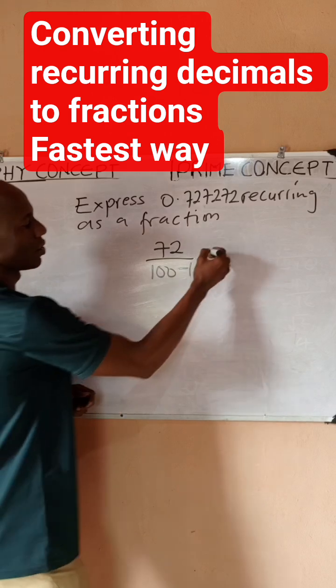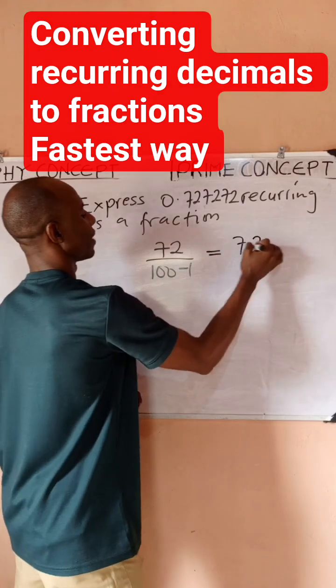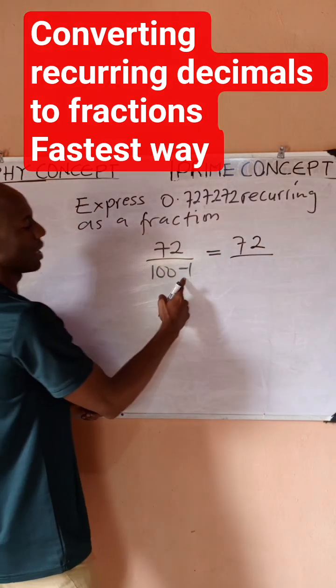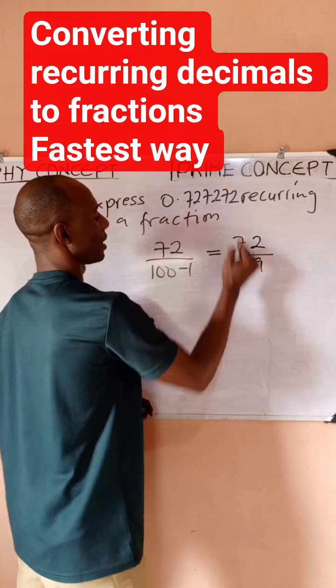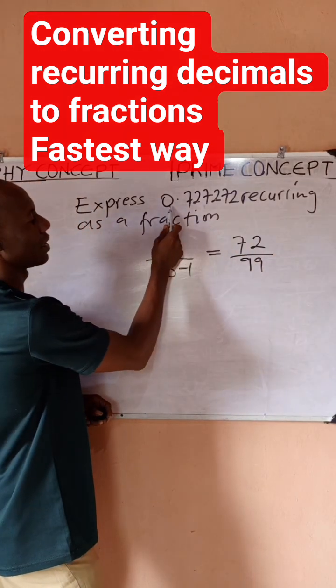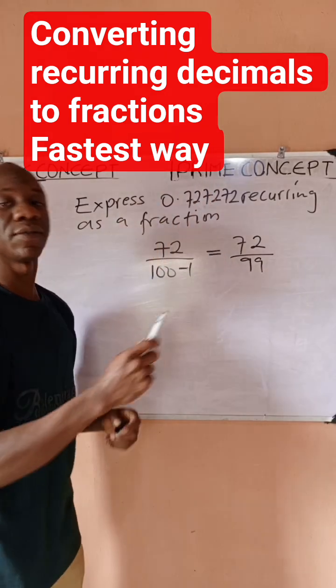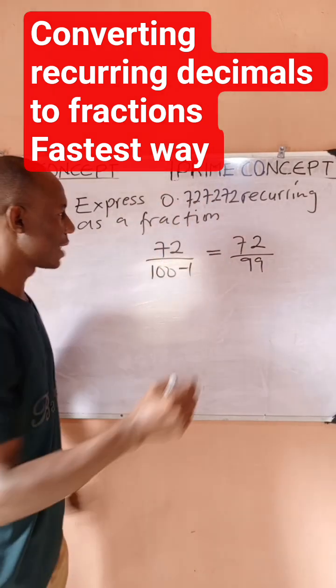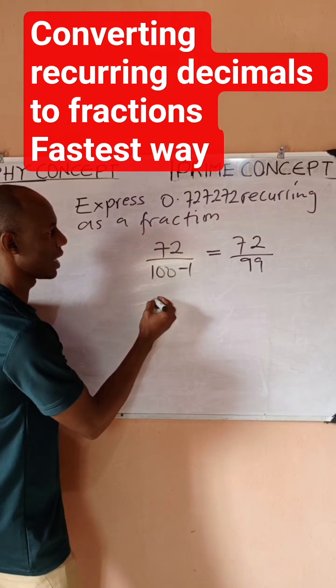So this would simply give me 72 divided by 100 minus 1, which is 99. So what it means is that 72 over 99 is the same thing as 0.727272. If you understand this, express this for me as a fraction: 0.777777.